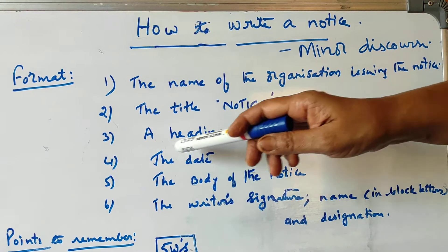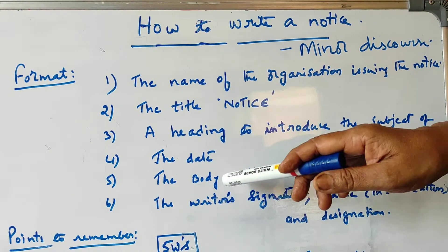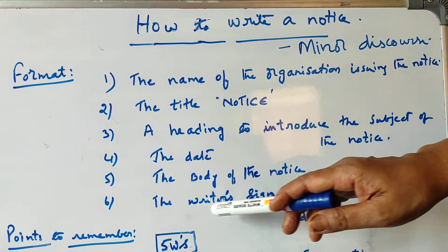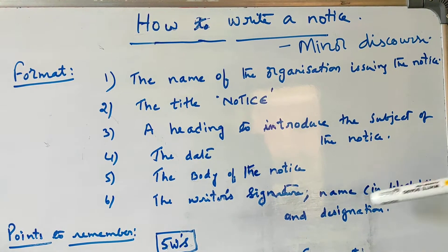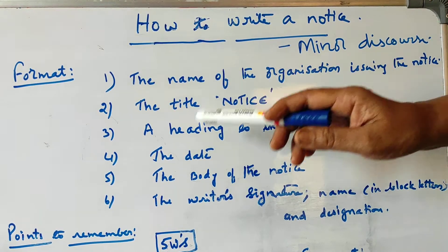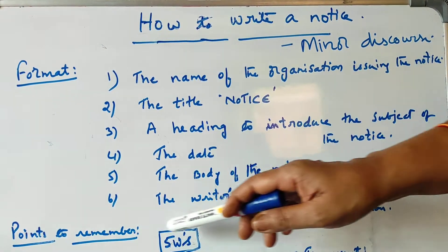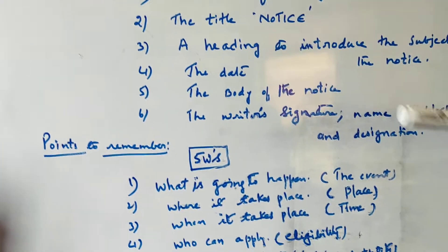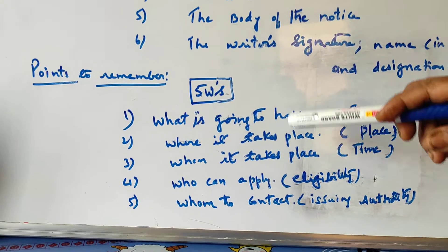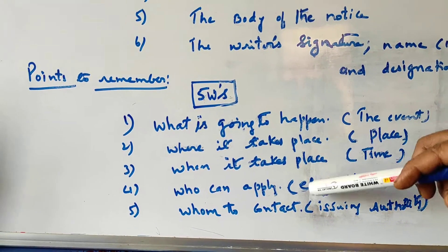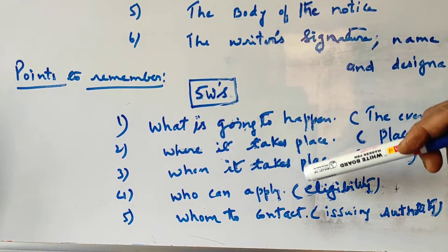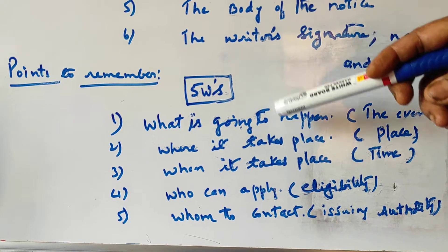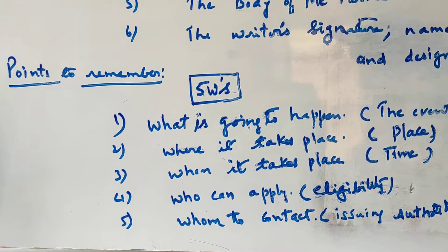The next point is the date, which we have to mention, and the body of the notice. Then the writer's signature, name in block letters, and designation. These five points should be there for every notice. If all these five points are included, then that will definitely be the correct notice format.